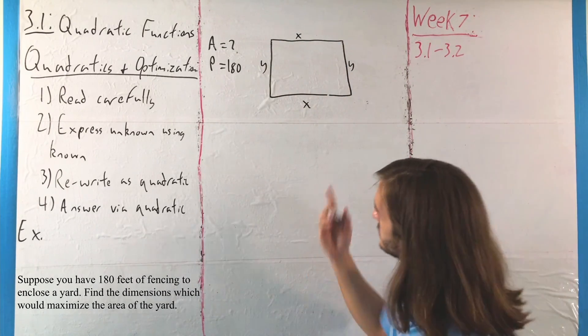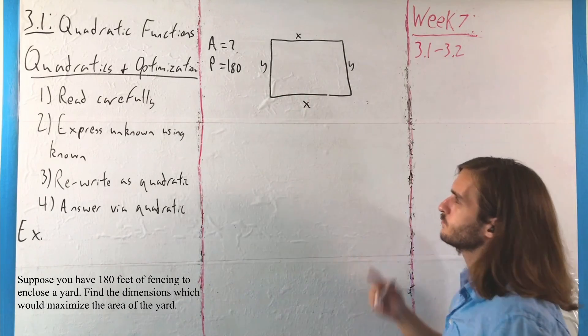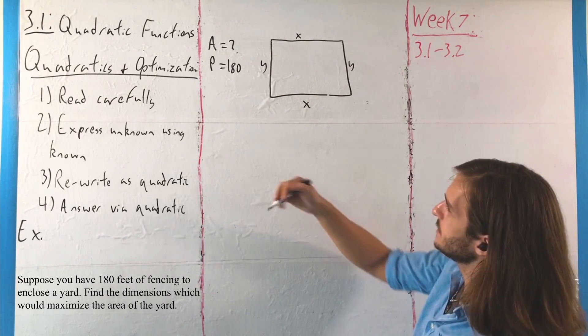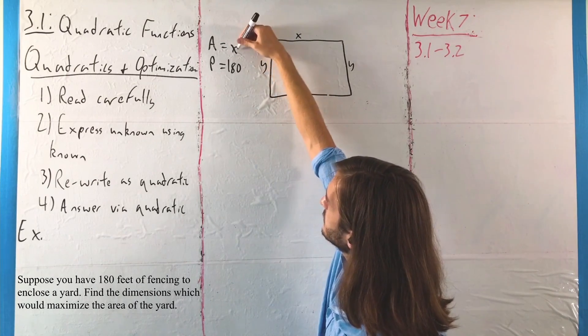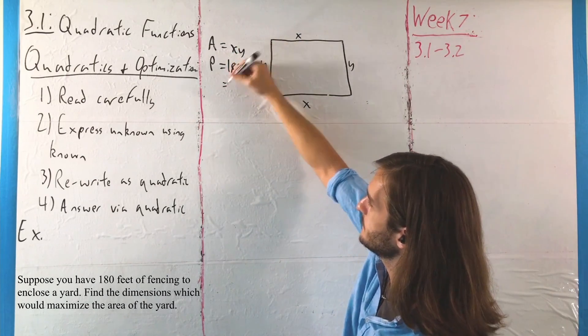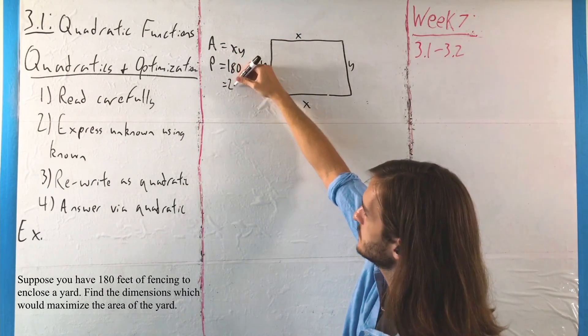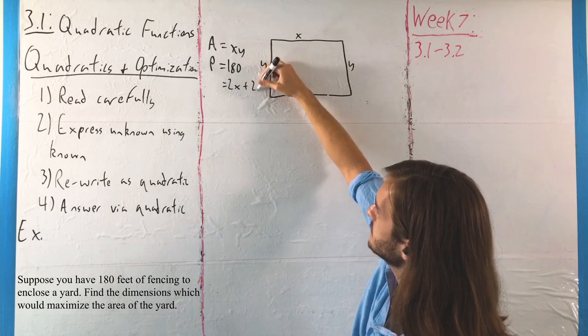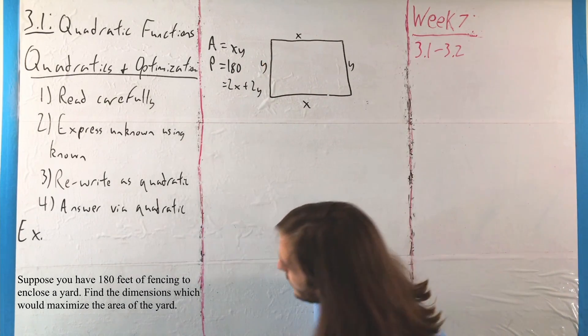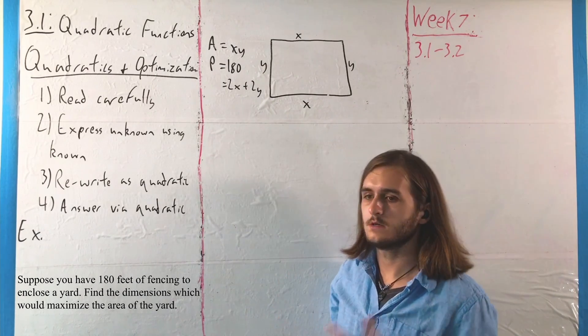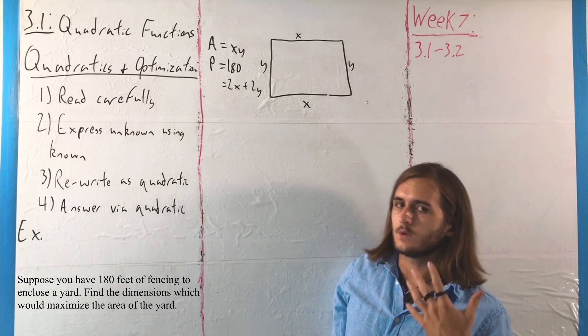But with these ideas in mind, we can then redefine A and P in a more useful way. The area is x times y, and the perimeter is 2x plus 2y, using known formulas, using known information about our rectangles.